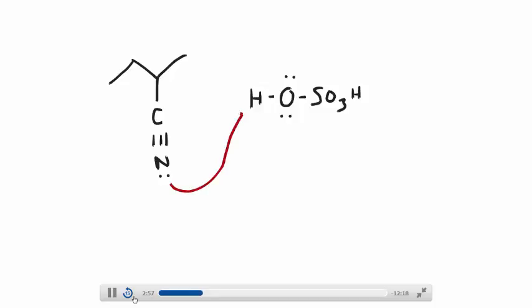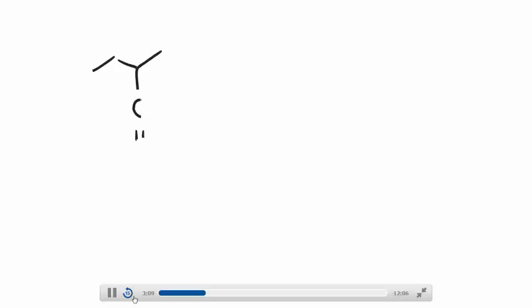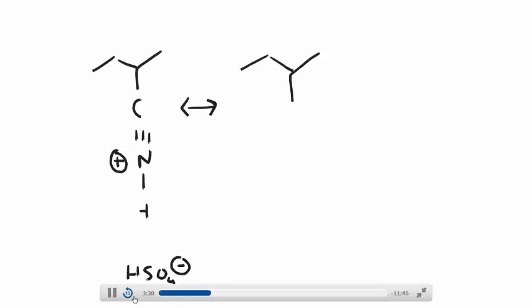Nitrogen can act as an electron pair donor and pick up a proton from the acid. Once it picks up that proton, be aware that there is resonance stabilization of that positive charge. This is why it's a favorable thing to do — you can break one of those pi bonds, give the electrons back to the nitrogen, and as you do so, carbon picks up the positive charge. The resonance structure on the left, where everyone has an octet, is the predominant one; on the right, carbon does not have an octet.